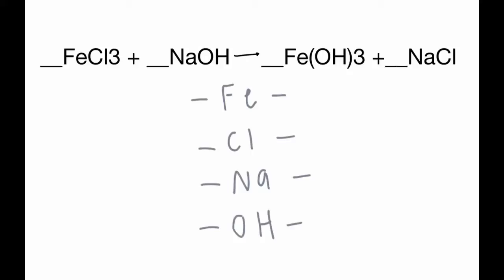On the left side we only have one Fe, and on the right side we also have one, so that's already balanced. On the left side we have three Cls and on the right side we only have one. On the left side we have one Na and on the right side we also have one. On the left side we have one OH, and on the right side we have three OHs.